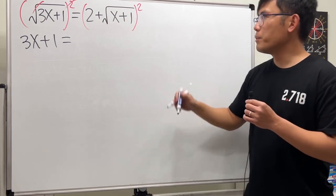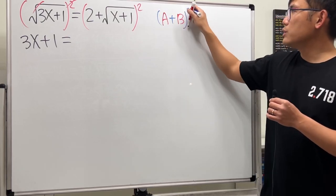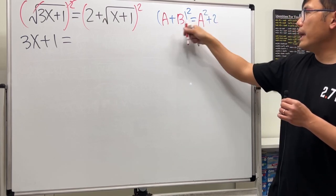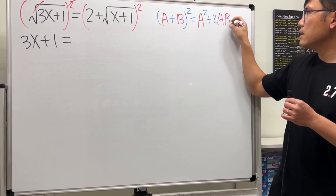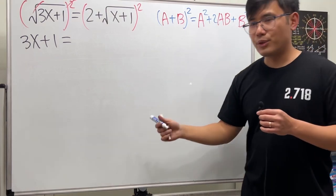And we'll be using the formula right here, a plus b squared, this right here, equals a squared plus 2ab plus b squared. This is much quicker.